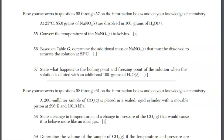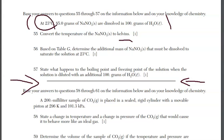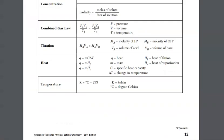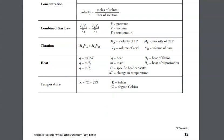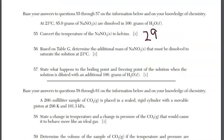Questions 55 through 57 use the information given together — notice the solid line separating clumps of questions in Part B-2. For question 55, we're asked to convert the temperature of sodium nitrate to Kelvins. We're given 23 degrees Celsius. Don't forget reference table T — that's where your mathematical equations are. Kelvin equals Celsius plus 273. So 23 plus 273 gives us 296 Kelvin.